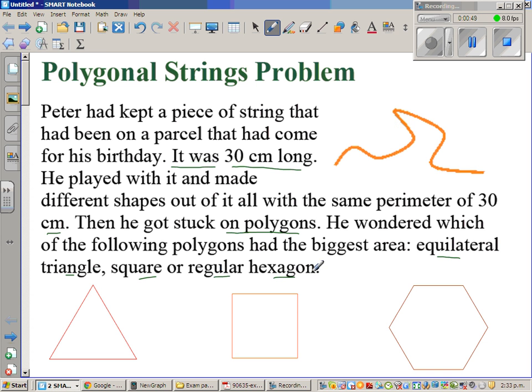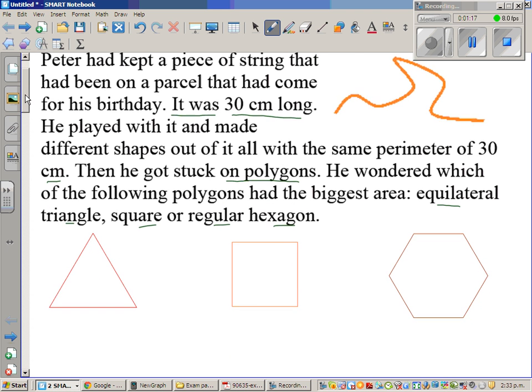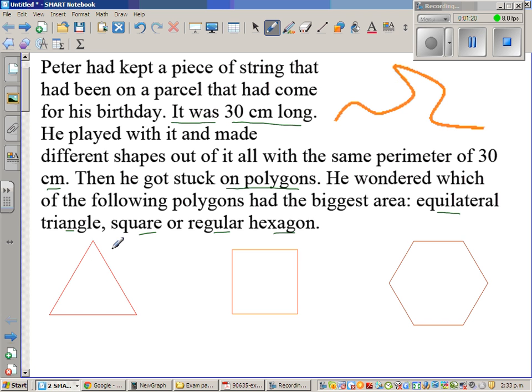This is one of the best ways of learning maths - to ask a question and try to answer it. So this is a string of 30 centimeters and he has made three different regular polygons: an equilateral triangle, a square, and a regular hexagon. The perimeter of this triangle is 30 and it's made by the string of 30 centimeters. The length of each side has to be 10 centimeters because 10 plus 10 plus 10 is 30 centimeters.